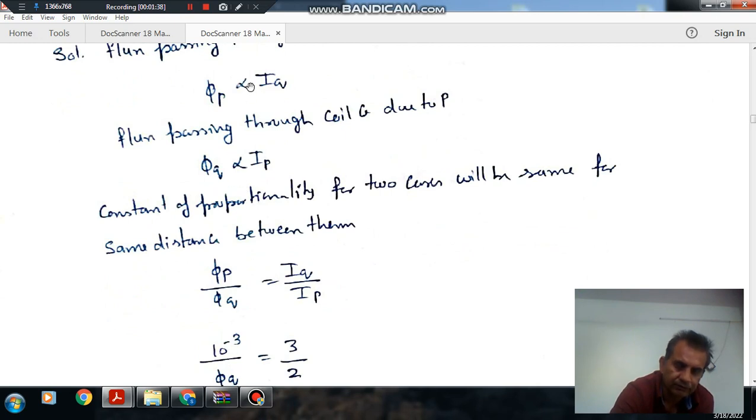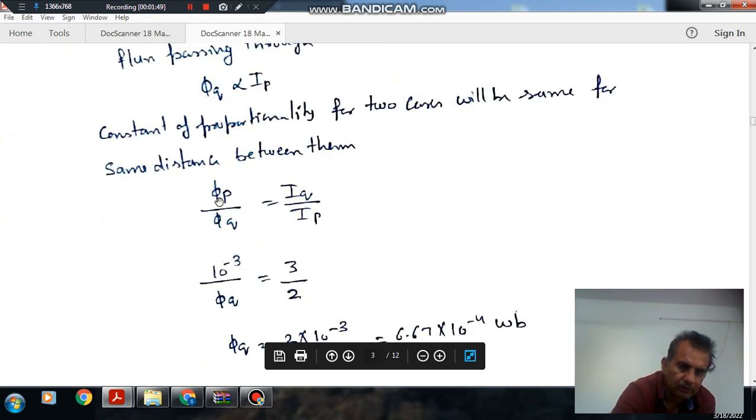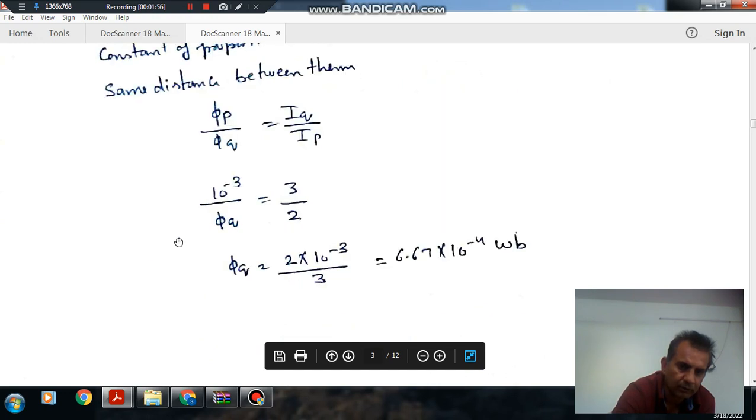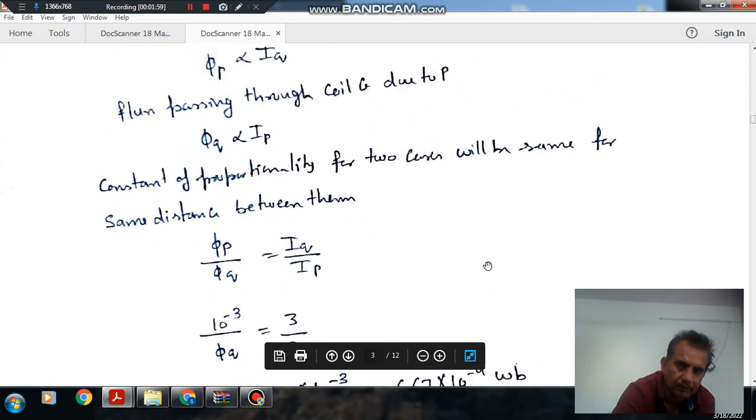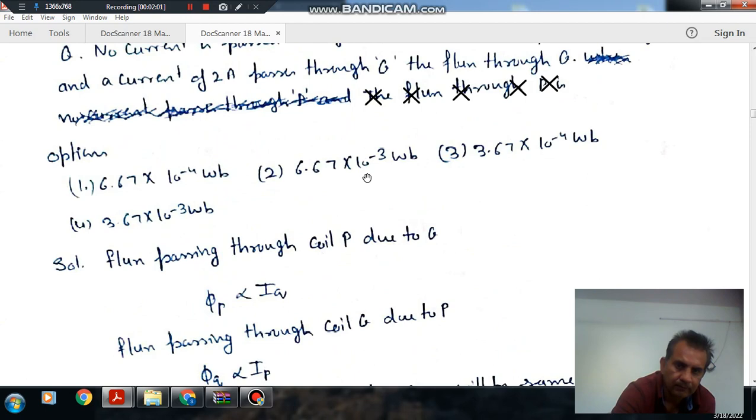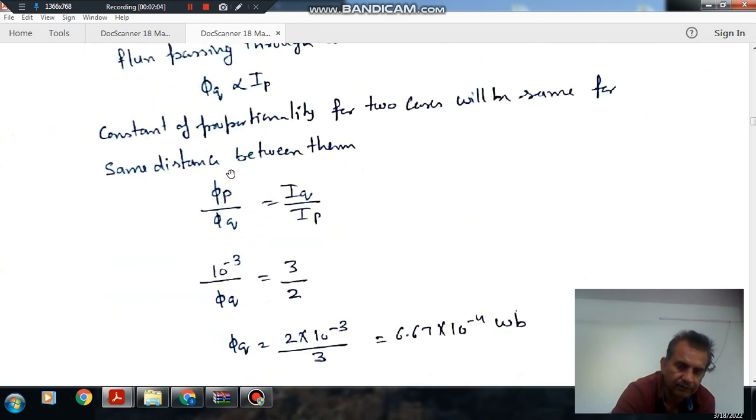As the distance is the same for both, the constant of proportionality is also constant. So Φ_P/Φ_Q = I_Q/I_P. We have Φ_P as 10^-3, I_Q as 3, and I_P as 2. So you can get Φ_Q as 6.67×10^-4. Option 1 is the result.